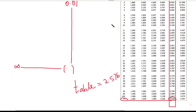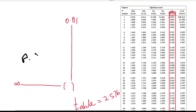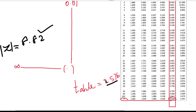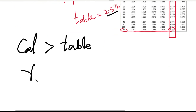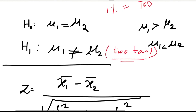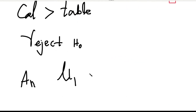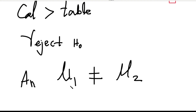Now compare: the calculated value of Z is 8.82 and the table value of Z is 2.576. Since the calculated Z (8.82) is greater than the table value (2.576), we reject H0. Rejecting H0 means H1 is accepted, so the conclusion is mu1 ≠ mu2 — that is, the average sales in state A and state B are not equal.